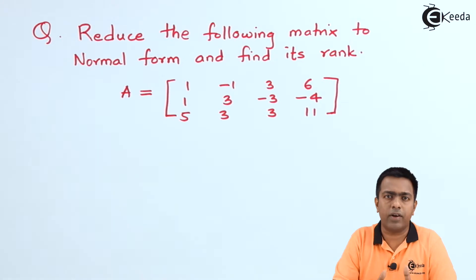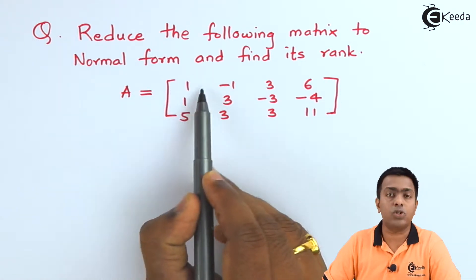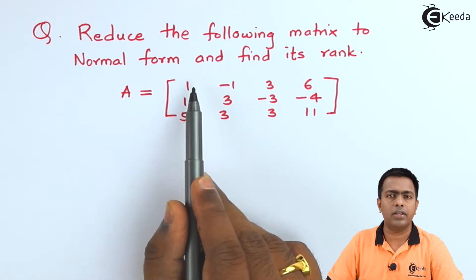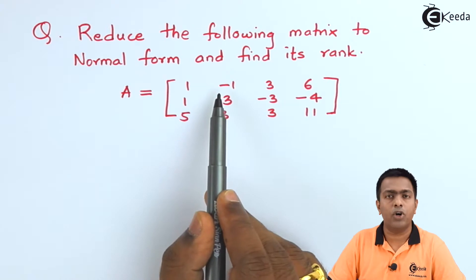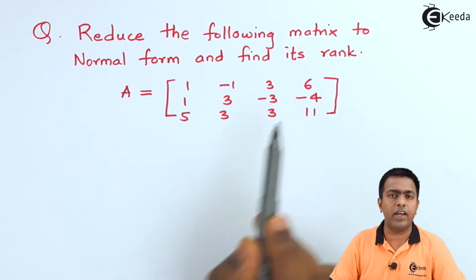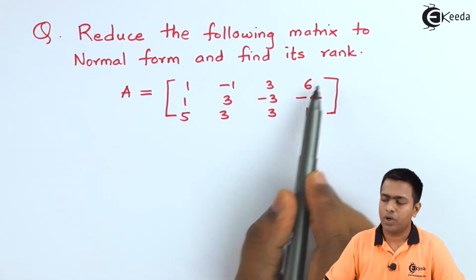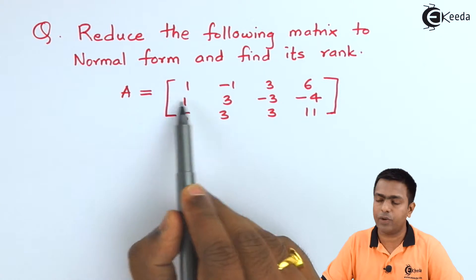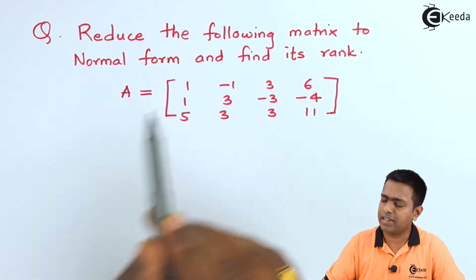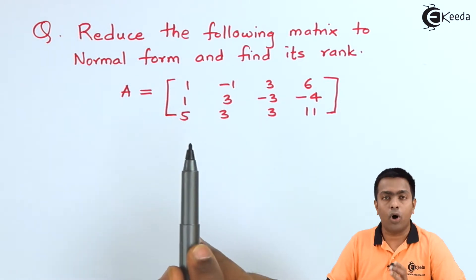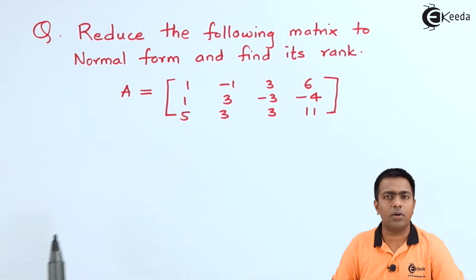Step one: observe the upper-leftmost element and bring it to 1. Right now it is already 1. If it is not 1, interchange with any row or column that has a 1. If there is no 1 anywhere, divide that row or column by the element to get 1. Always bring 1 at this position. Here we already have 1.